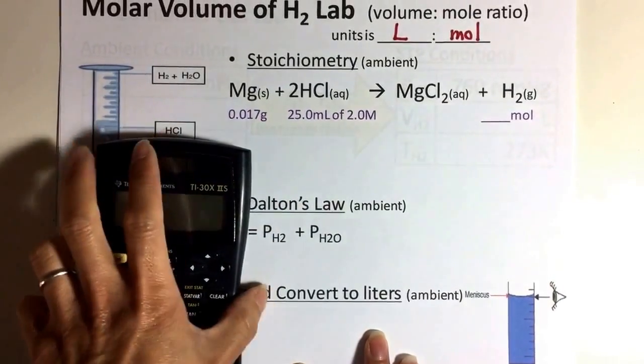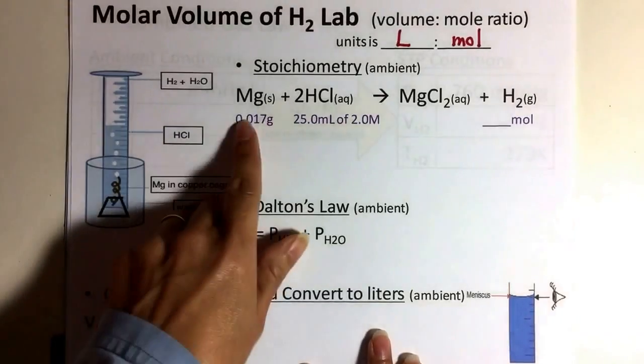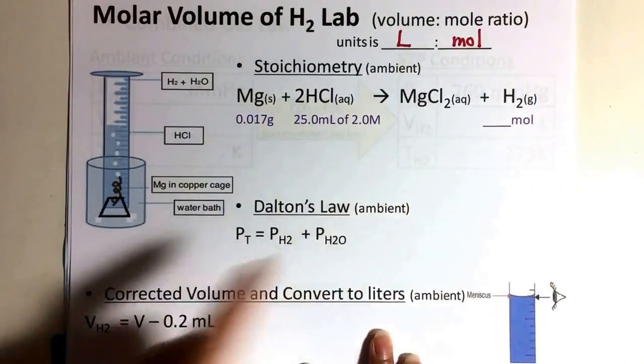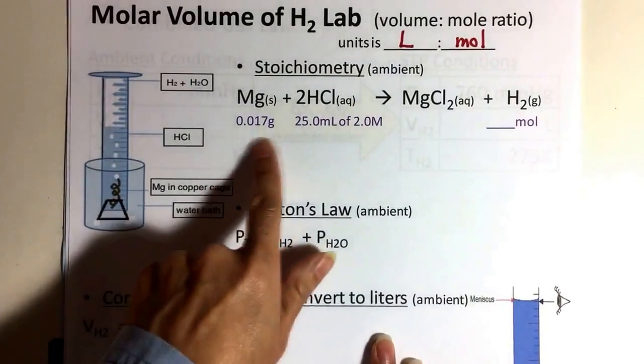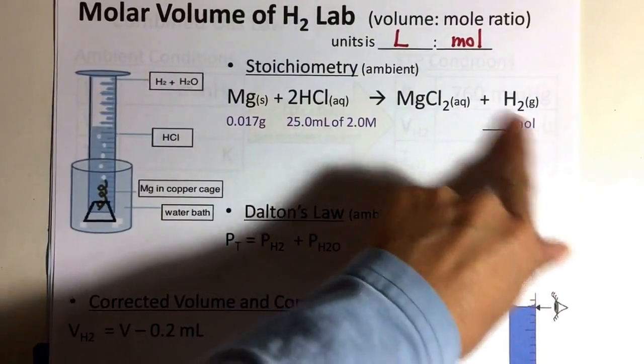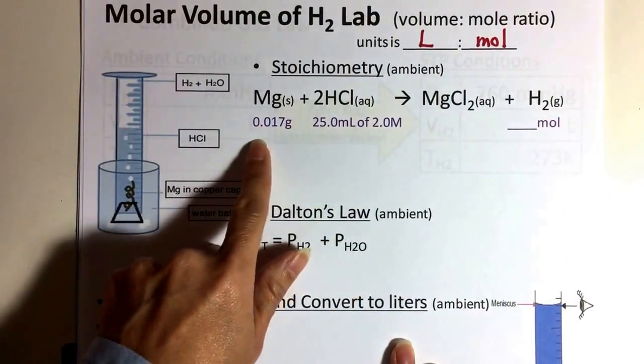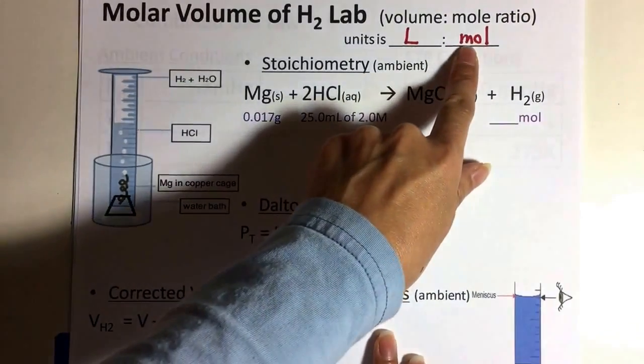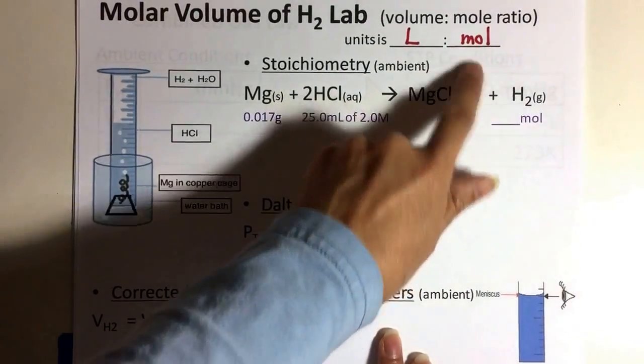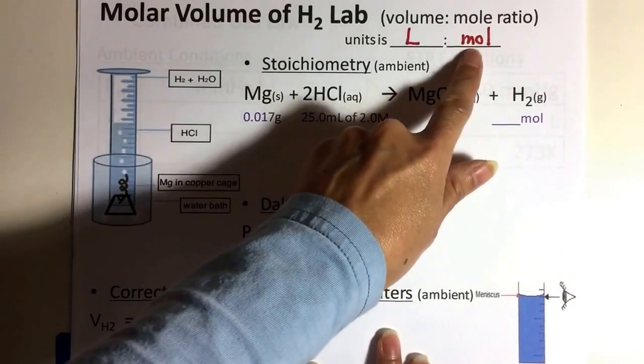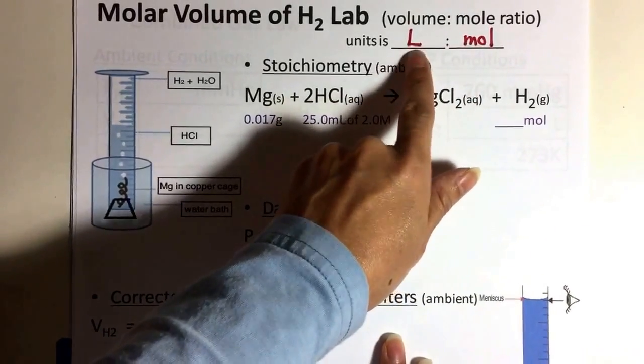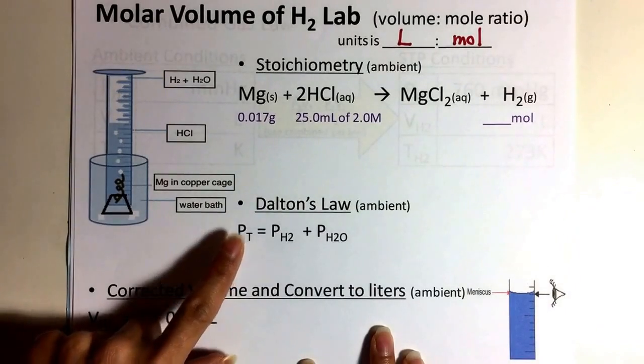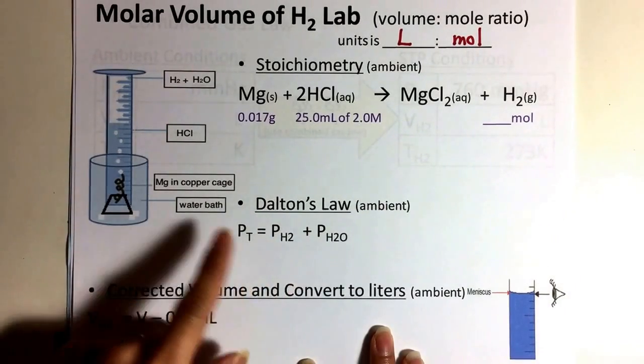And you want magnesium to be the limiting reactant, because how much magnesium reacts will tell you how many moles of hydrogen forms from that. So the idea is to try to get to moles of hydrogen from the grams of magnesium that you reacted. Now, that will give you the moles of hydrogen up here. So really, the stoichiometry will get you the moles of hydrogen. Now we need the volume.